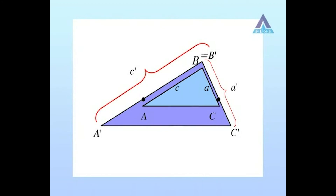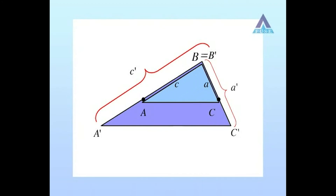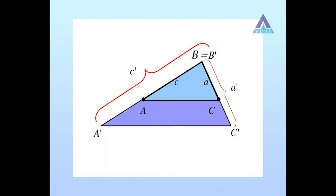If AC is parallel to A'C', then what do we know about angles B'AC and B'A'C'? Those are corresponding angles again, and therefore they must be equal.